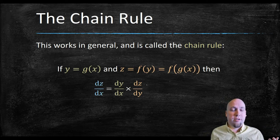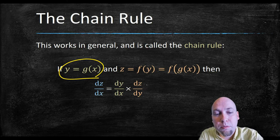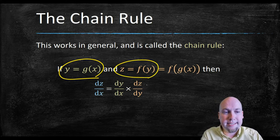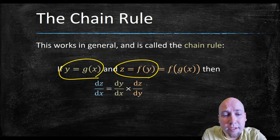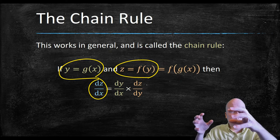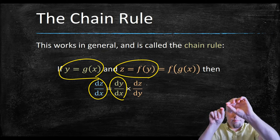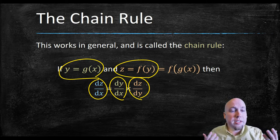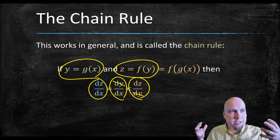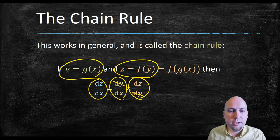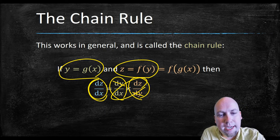Now we'll write it down more formally. Suppose you've got a function g that transforms x into y, and another function f that transforms y into z, so your input variable is transformed twice — it goes from x to y to z. The rate of change of z with respect to x is just dz/dy times dy/dx — the individual rates of change multiplied together. The dy's cancel and you're left with dz/dx on both sides, so they're equal.